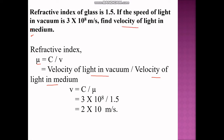Since we are asked to find the velocity of light in the medium, we rearrange and make V the subject. So velocity of light in medium = C ÷ refractive index = 3 × 10⁸ ÷ 1.5 = 2 × 10⁸ meter per second. This is your velocity of light in the medium.